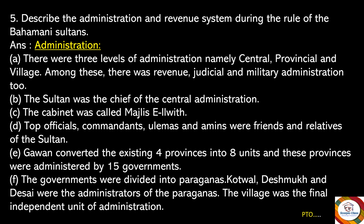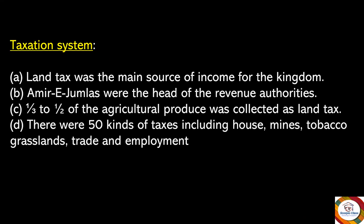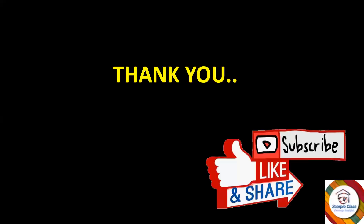Regarding the revenue system: land tax was the main source of income for the kingdom. Amir Jumlas were the heads of the revenue authorities. One-third to one-half of the agricultural produce was collected as land tax. There were 50 kinds of taxes, including taxes on houses, mines, tobacco, grasslands, trade, and employment.